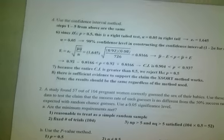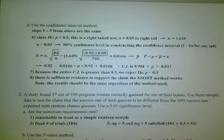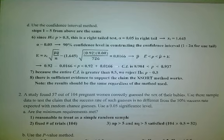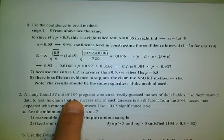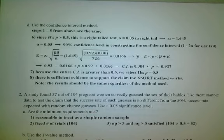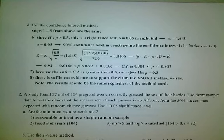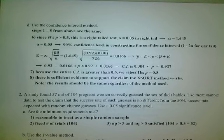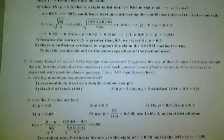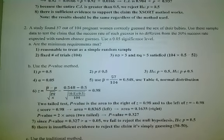Now a second example: a study of 57 out of 104 pregnant women who correctly guessed the sex of their babies. We test the claim that the success rate of such guesses is no different from 50/50 - the idea being this is just random chance. We use the 0.05 significance level. This can be treated as a simple random sample with a fixed number of trials, 104, and NP equals NQ equals 52, so minimum requirements are met.